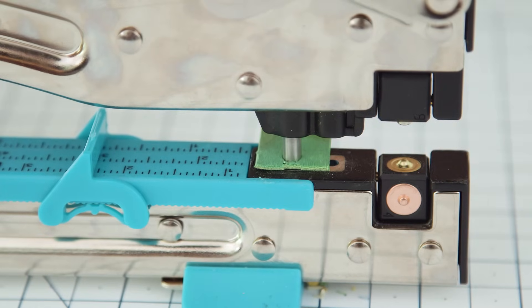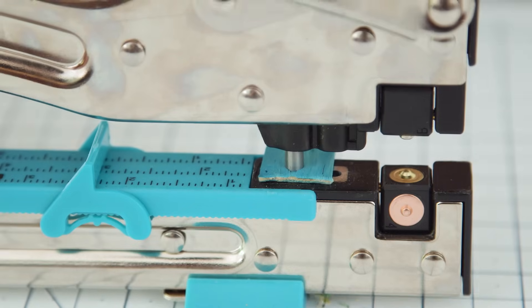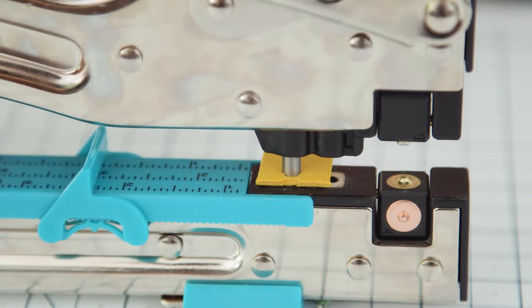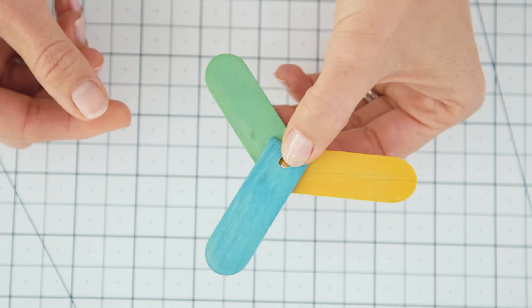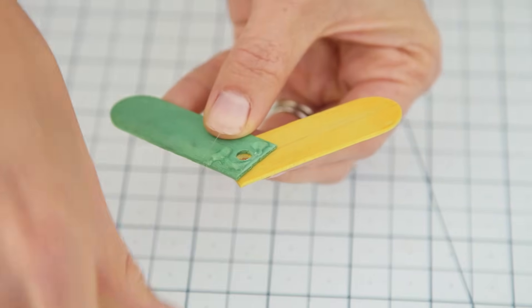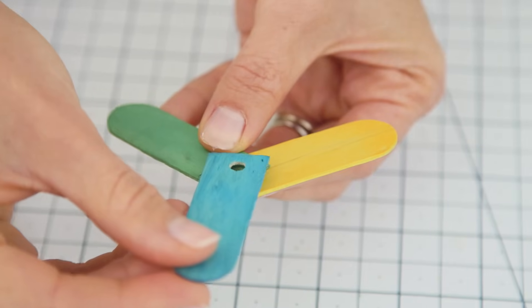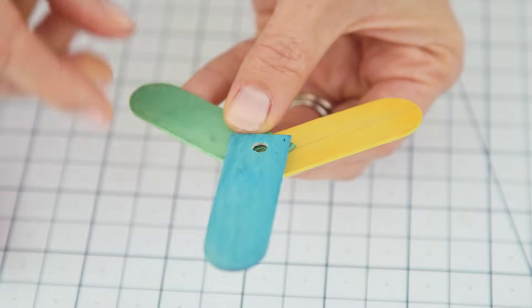Next we're going to punch a hole on the inside of each piece with our crop-a-dile. If you don't have a crop-a-dile you will need a hole punch that can punch through wood. Line up your holes and adjust the pieces until they're each the same distance apart. Then secure with hot glue. You could also use E600 or wood glue, it'll just take a little longer to dry.